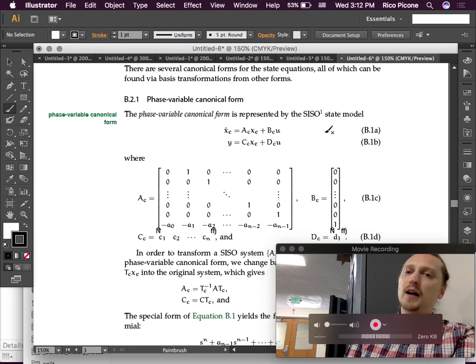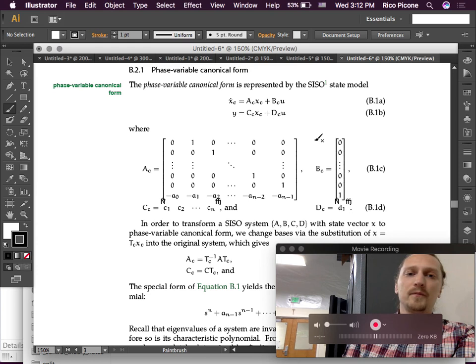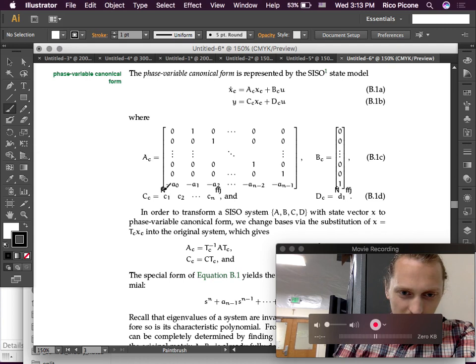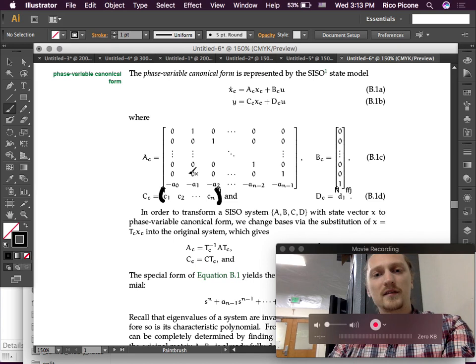The phase variable canonical form is represented by the single-input, single-output state model B1, right here, where the A matrix is of this form. So, these are just parentheses. It doesn't need to be all of that gobbledygook.